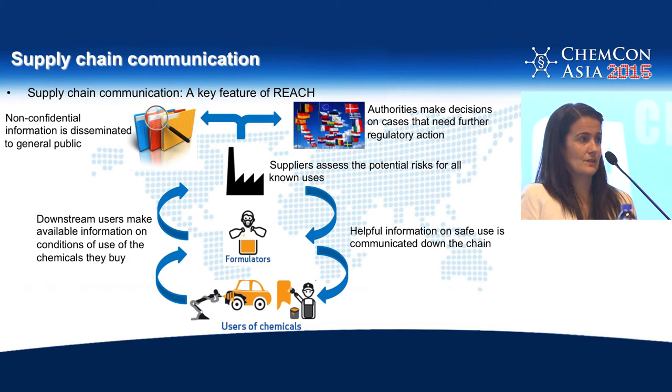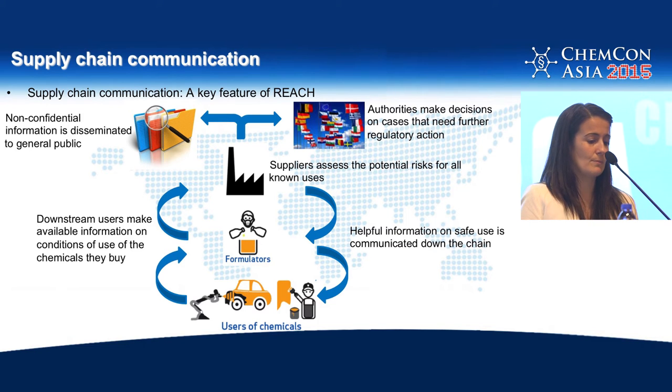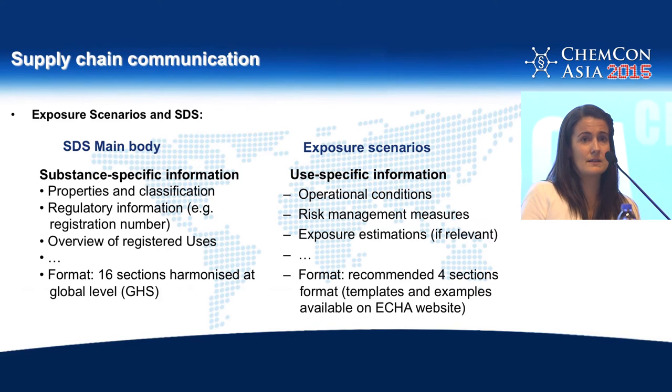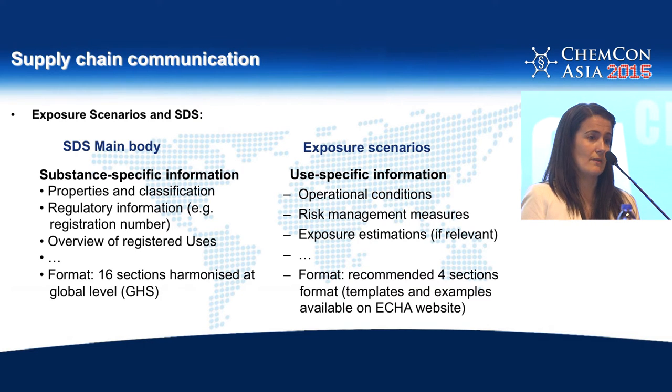The main body of the safety data sheet has the more substance-specific information, which is relevant across uses — properties, physicochemical properties, regulatory information. Has the substance been registered? Then you will see the registration number. Is the substance subject to authorization under REACH? It will have an authorization number. All this kind of information you will see in the main body. Exposure scenarios have use-specific information, so for each use you have one exposure scenario that tells you what are the conditions of safe use in that case.